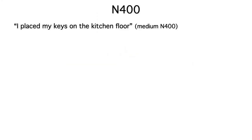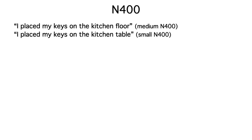For example, I place my keys on the kitchen floor is a perfectly reasonable thing to say, but floor is somewhat unexpected, so it would give you a medium-sized N-400. If the sentence ended in table, that would be more expected, so table would elicit only a small N-400.